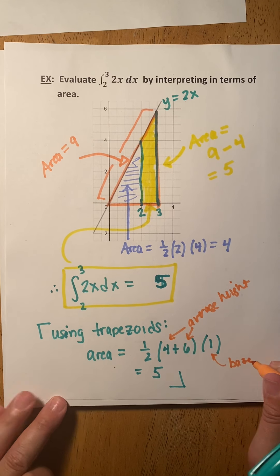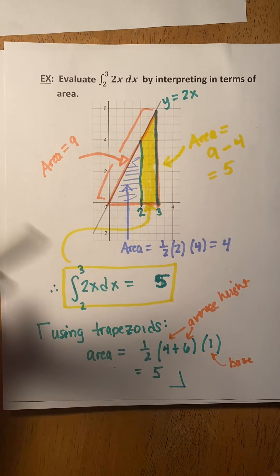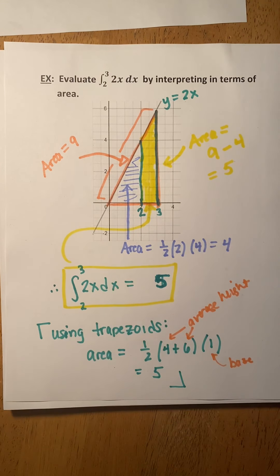Notice you don't need to know the trapezoid formula — you could have just used two triangles and gotten the same result.